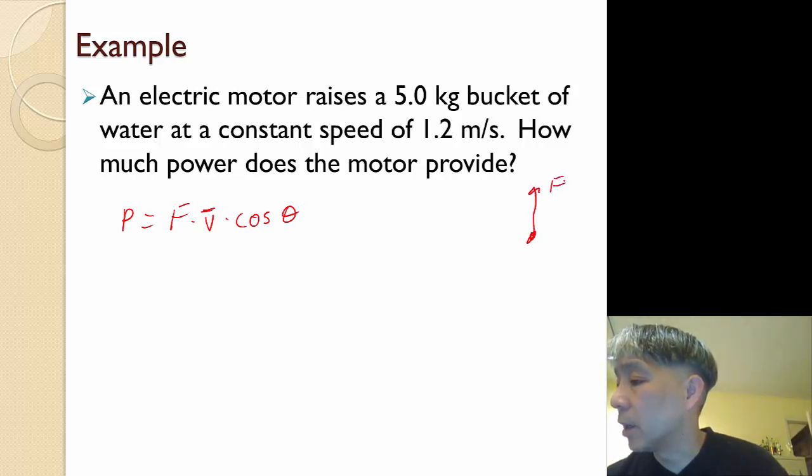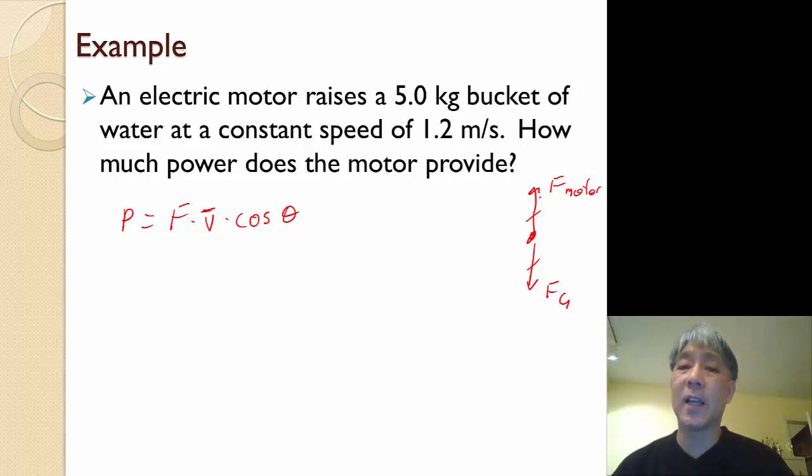If I think about this, this is the force of the motor. It is opposing the force of gravity, and it is the same magnitude because it's moving at a constant speed. And my displacement is upward, so my cosine of theta is going to be cosine of zero. So this is simply going to be m times g times v bar times the cosine of zero.